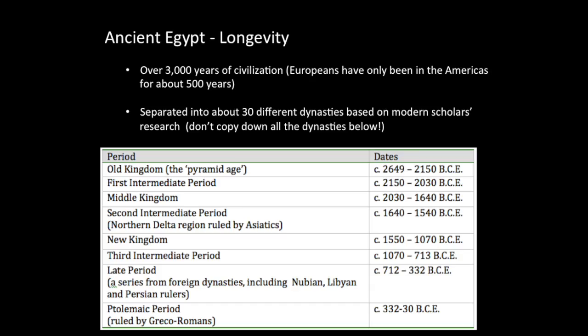When you think of ancient Egypt, think of longevity. Ancient Egyptian civilization lasted for more than 3,000 years and showed an incredible amount of continuity. To put that in perspective, Cleopatra VII's reign — the Cleopatra we know and love — ended in 30 BCE. Her reign is closer to our time than it was to the construction of the Pyramids of Giza.